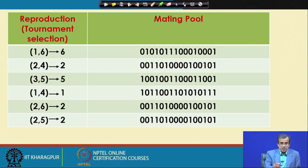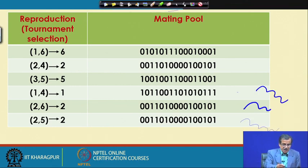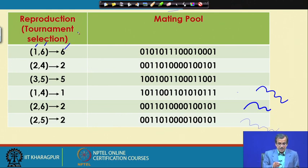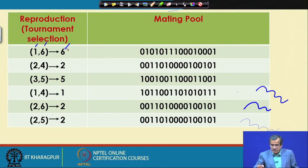At each time, I am just going to pick two solutions out of this particular six at random. In the first tournament, supposing that I have selected the first GA string and the sixth GA string and I am just comparing their fitness values. If I compare the modified fitness values for the first and the sixth, the minimum fitness is for the sixth one, the sixth GA string. So I am going to select the sixth GA string — the sixth GA string from the initial population will be directly copied here.